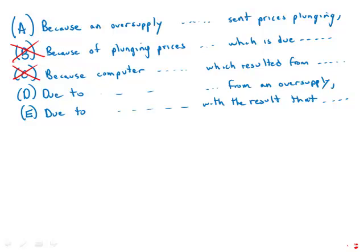Choice E: 'due to an oversupply with the result that' — first of all, that's just redundant. 'Due to... with the result that' is redundant, and it's also wordy, so that one is out. Now we're choosing between A and D. With D again — 'due to plunging computer chip prices from an oversupply' — something is a little funny about that.